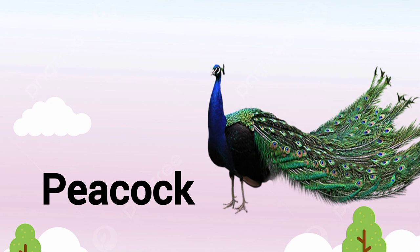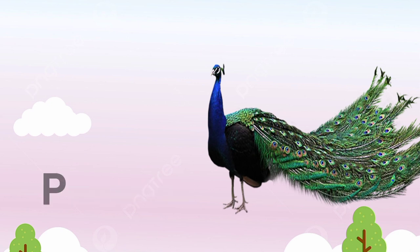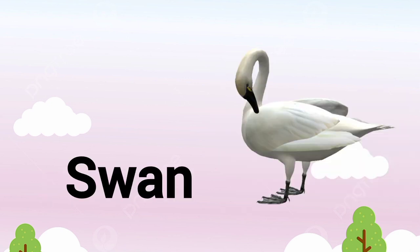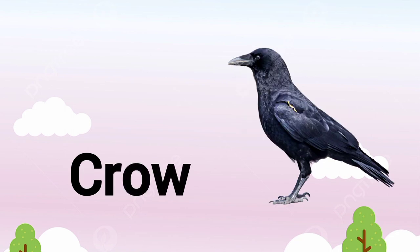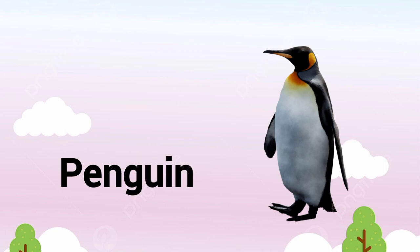Peacock — P-E-A-C-O-C-K — peacock. This is a peacock. Swan — S-W-A-N — swan. This is a swan. Crow — C-R-O-W — crow. What is this? This is a crow.